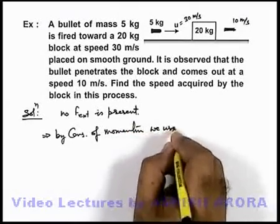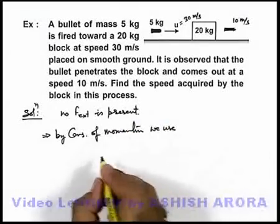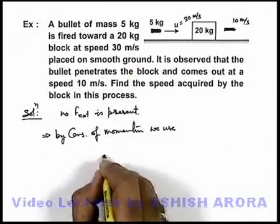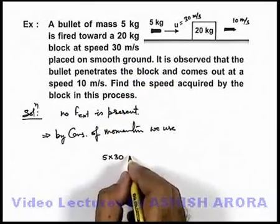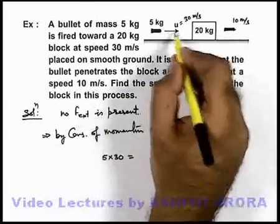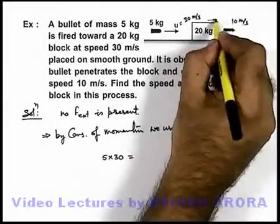We use: the initial momentum of the system was only in the bullet, that was 5 × 30. When the bullet comes out, say the block moves with speed v.